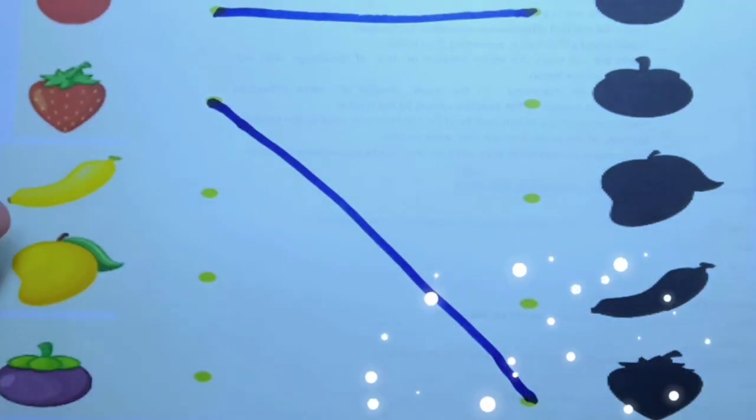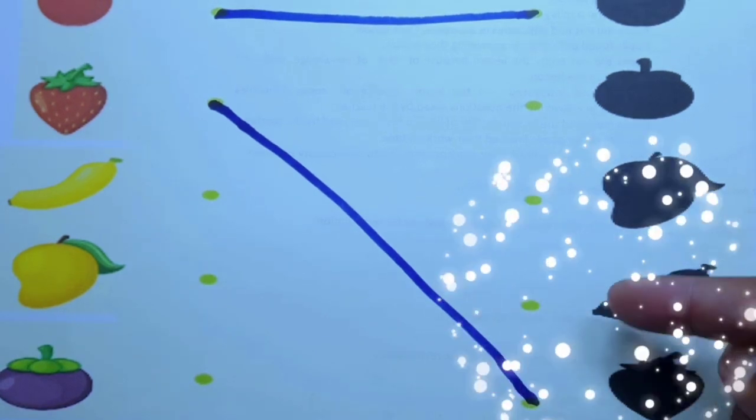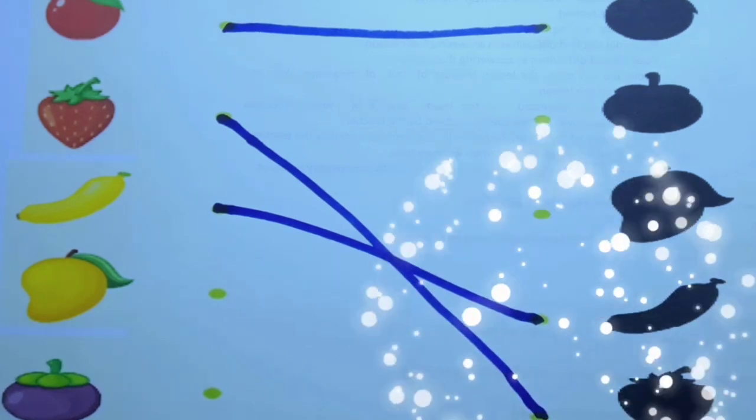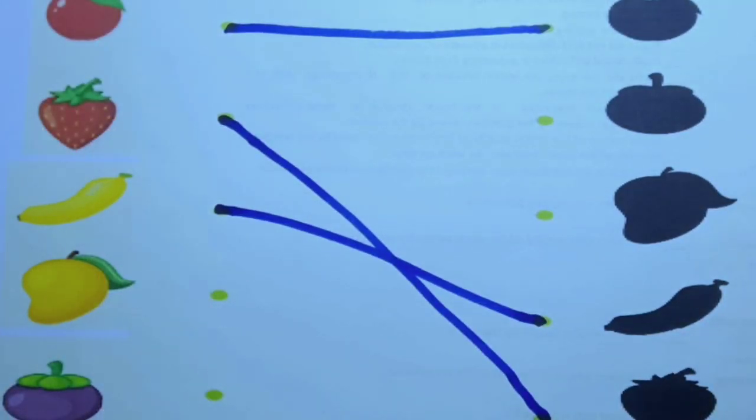How about the shadow of the banana? Amazing! The banana goes right here. Next is the mango. Yes! The yellow mango is right here.